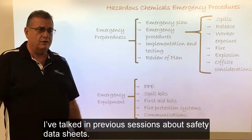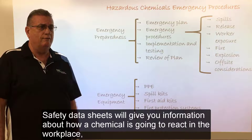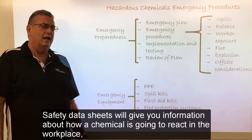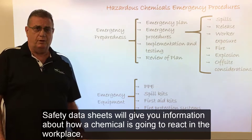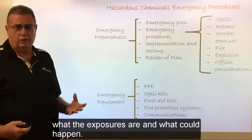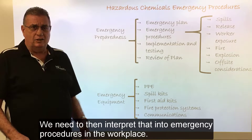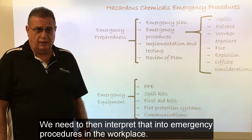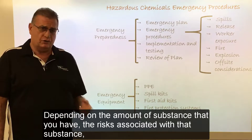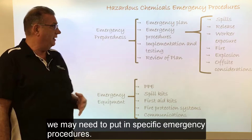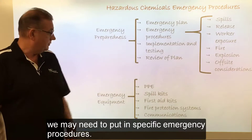I've talked in previous sessions about safety data sheets. Safety data sheets will give you information about how a chemical is going to react in the workplace, what the exposures are, and what could happen. We need to then interpret that into emergency procedures in the workplace. Depending on the amount of substance that you have and the risks associated with that substance, we may need to put in specific emergency procedures.